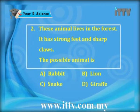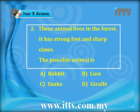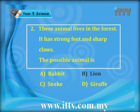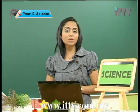Question 2: this animal lives in the forest, it has strong feet and sharp claws. The options are: A rabbit, B lion, C snake, D giraffe. Strong feet and sharp claws — these are features of carnivores. So you have to decide which animal in the options is actually a carnivore. The correct answer is B lion. Lions live in the forest and have strong feet and sharp claws. Eagles also have sharp claws.